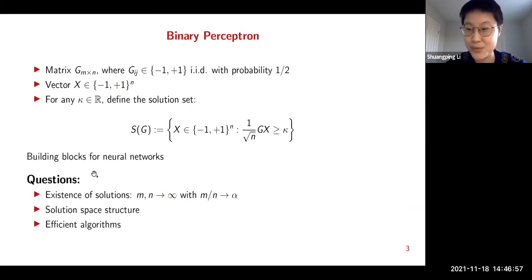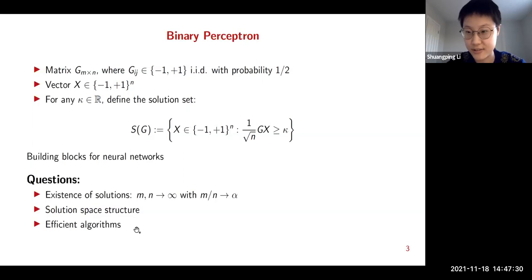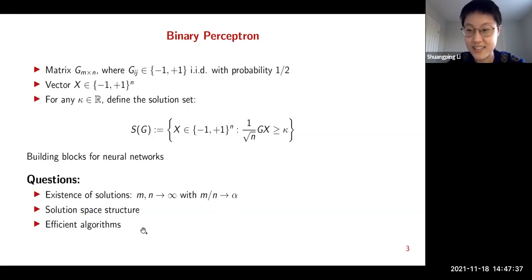Time is limited, so briefly: the perceptron is actually a building block for neural networks. When talking about binary perceptron, there are three questions of great importance. The first is the existence of solutions — specifically, in the regime where m and n go to infinity with a fixed ratio alpha, for what value of alpha is the solution set non-empty? The second is whether the solution space has interesting structural properties. The third is efficient algorithms. Today I will focus more on the second and third questions.